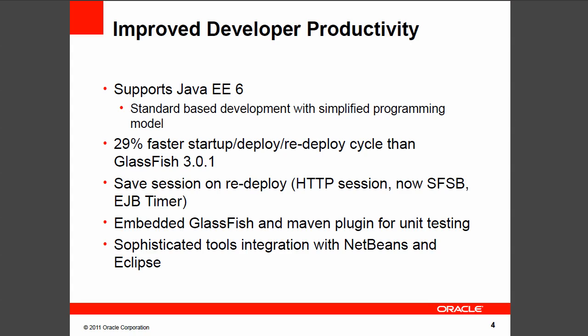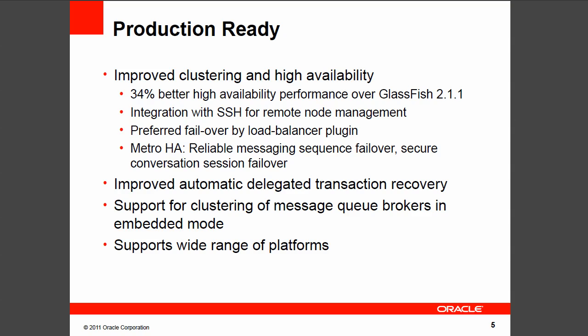3.1 continues to provide excellent support for NetBeans and Eclipse. Let's review the production-ready features of this release. 3.1 delivers credible enterprise feature sets and provides optimized runtime performance for your production deployment. Based on our internal performance analysis and benchmarks, 3.1 provides 34% better HA performance over GlassFish 2.1.1.